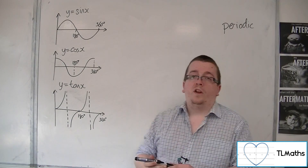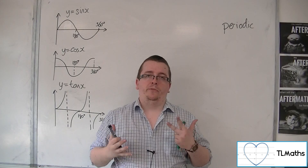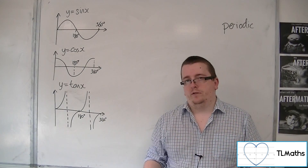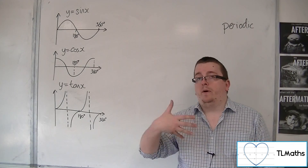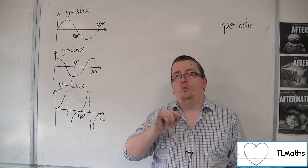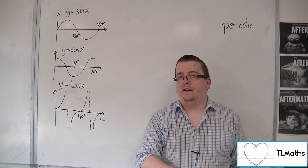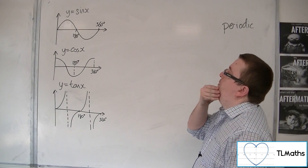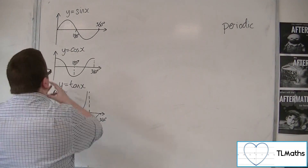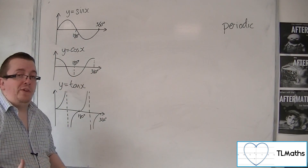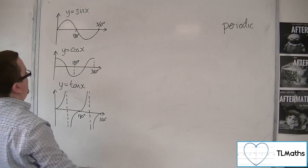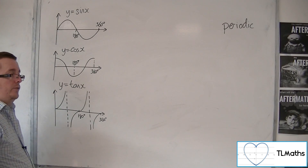What I mean by that is that they repeat themselves. Each of them has a period, and what I mean by that is a period is a distance over which the curve repeats itself. If you look at each of these curves, this is just a small section of them — a small cutout between 0 and 360 degrees of each of these curves.